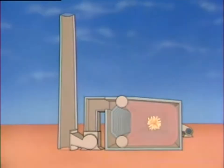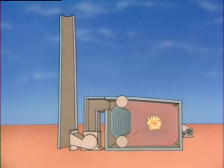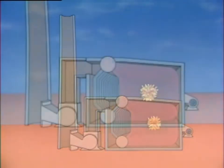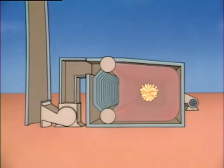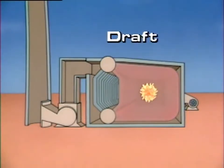The air flow into a boiler provides oxygen for combustion. Gases produced during combustion flow out of the boiler and are discharged from the stack. The flow of air and other gases through a boiler is referred to as draft.